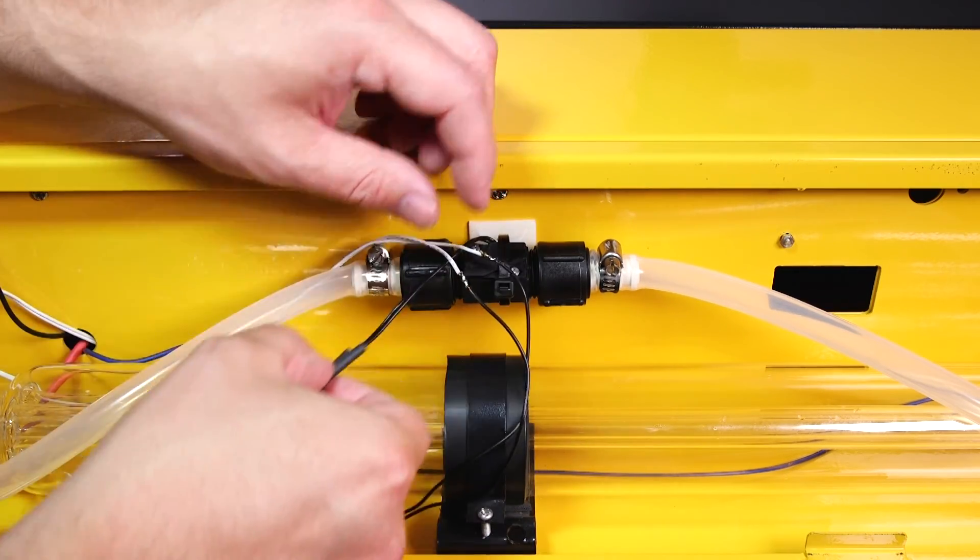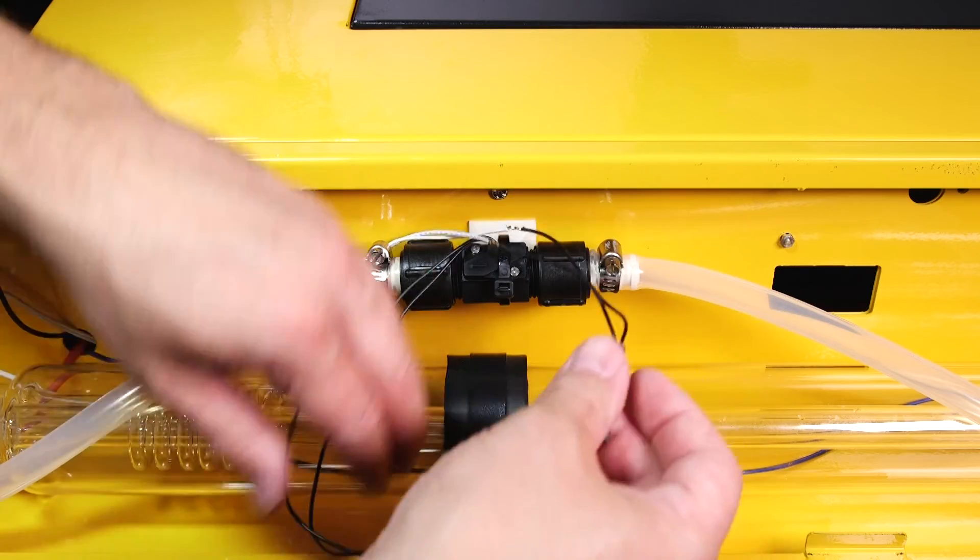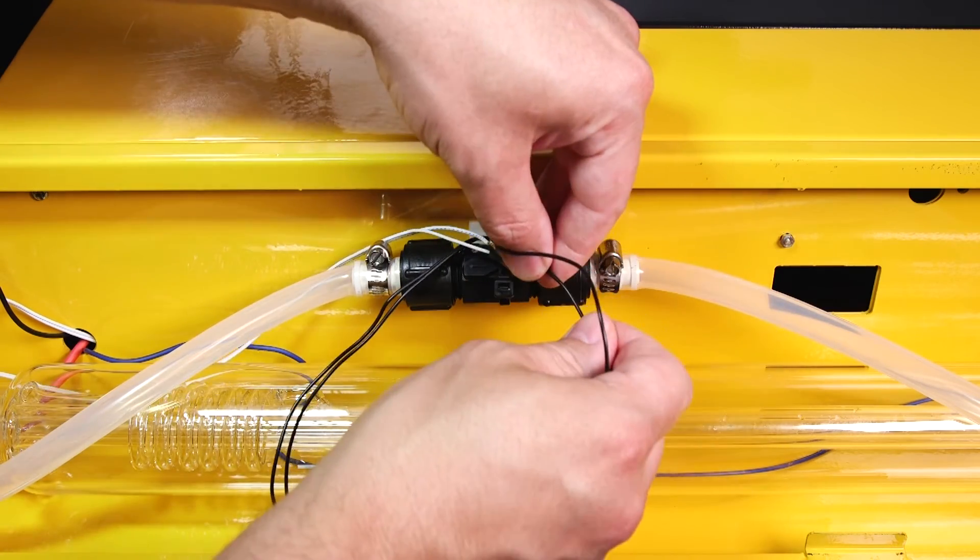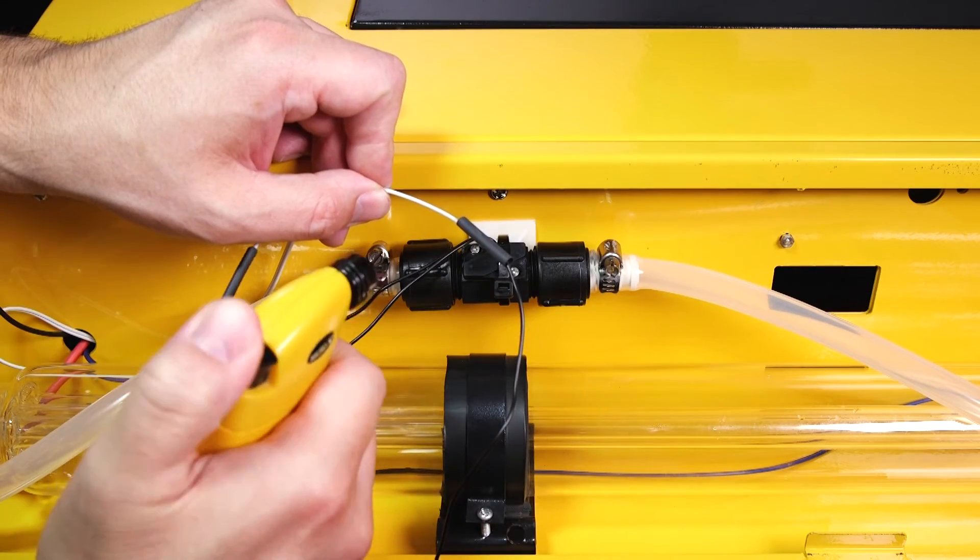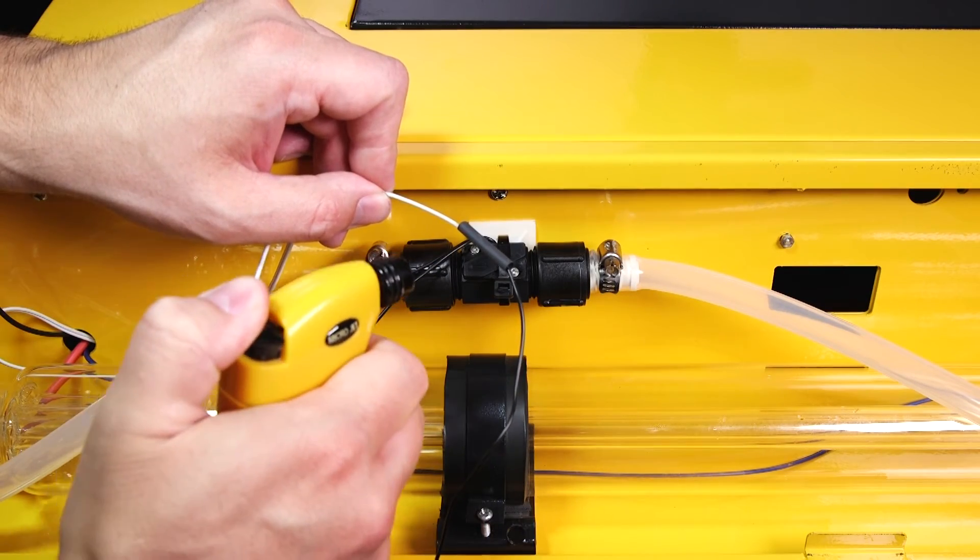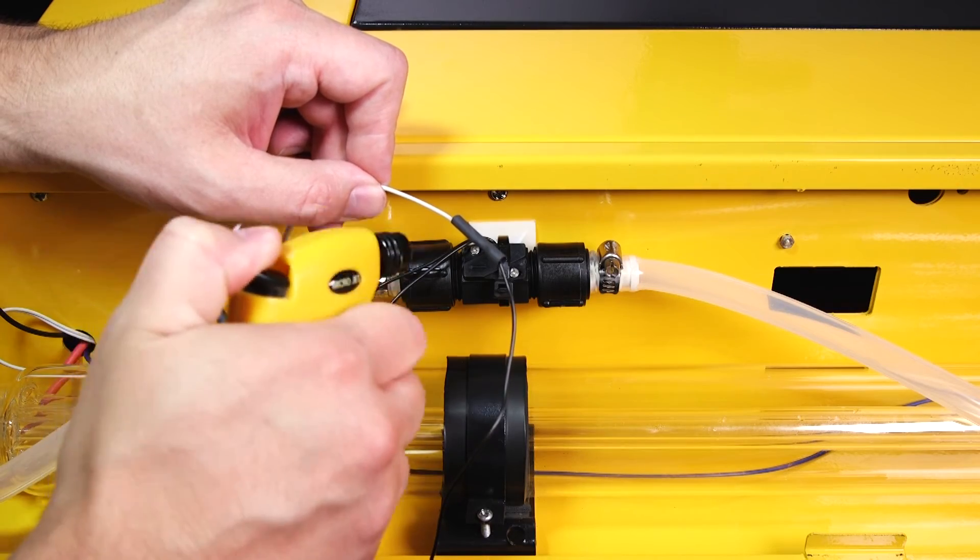I'm now going to take the shrink tubing that I previously placed over the wires and slipped out of the way and place them over the newly soldered connections. To finish this off I'm going to use a mini torch to shrink the shrink tubing over the connection.